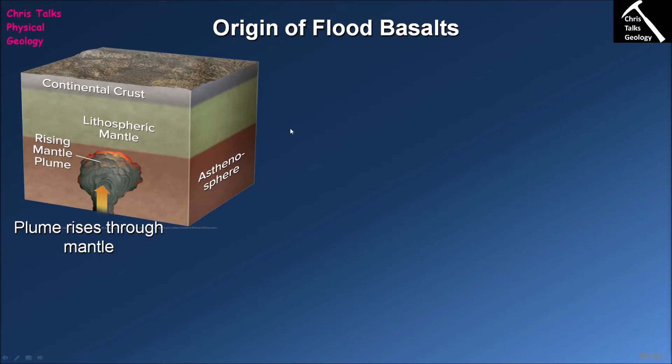Let's go through the model once again. A mantle plume is a ball of very, very hot mantle rocks. Because they're so hot they have a lower density than the surrounding mantle, so this block of very hot mantle rock naturally wants to rise. It starts off down at the base of the mantle towards the core-mantle boundary and comes shooting up through the mantle towards the base of the lithosphere. As it rises, pressure drops, which eventually leads to decompression melting.